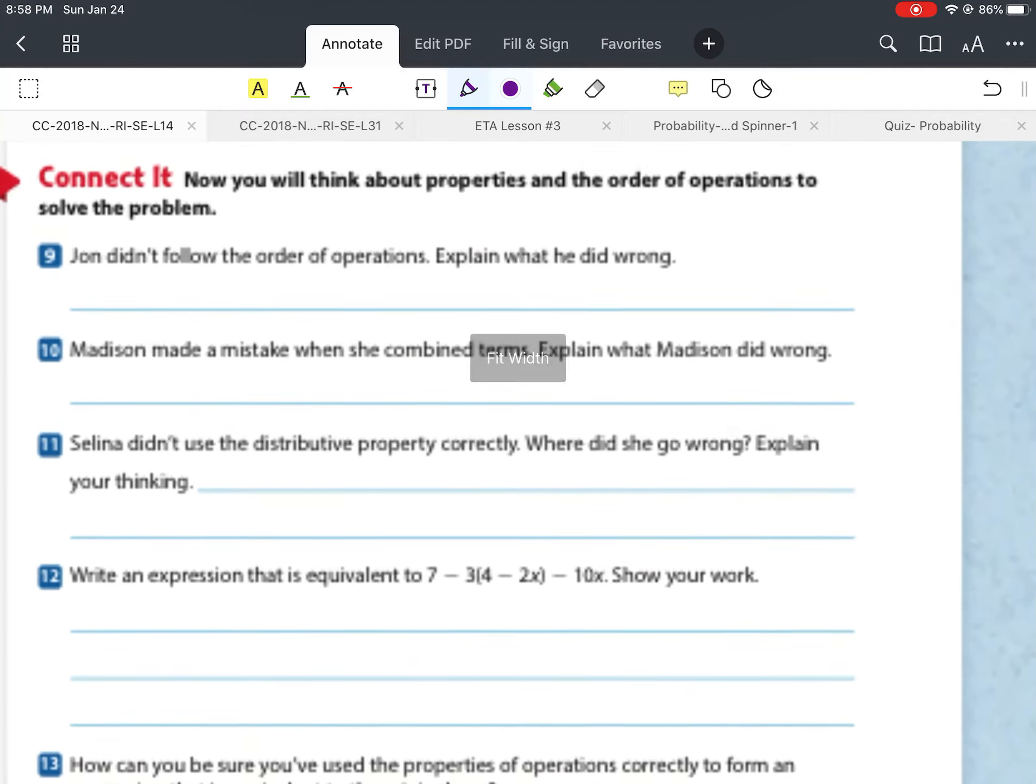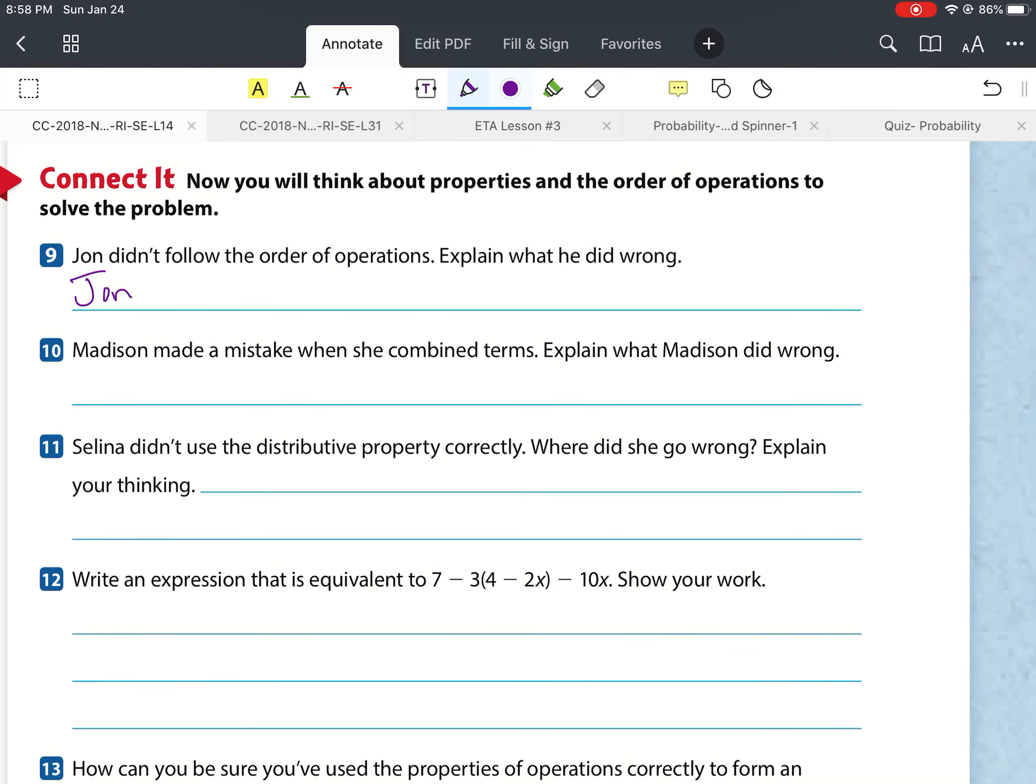Okay. So with number 9, it says, John didn't follow the order of operations. Explain what he did wrong. Well, John subtracted 7 minus 3 before multiplying. For number 10, it says, Madison made a mistake when she combined terms. Explain what Madison did wrong. Well, the 4 and 2x are not like terms. So you cannot combine them.